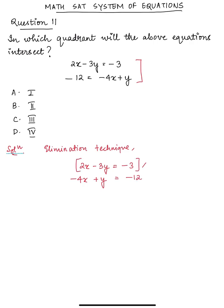So if I multiply this equation by 2, it will be 4x and minus 4x which will cancel to zero. So 4x minus 6y equals minus 6, minus 4x plus y equals minus 12. Now we can just add them up.